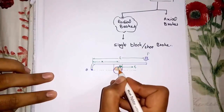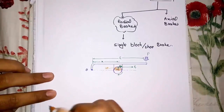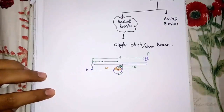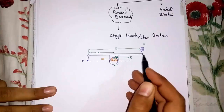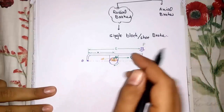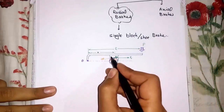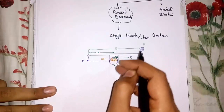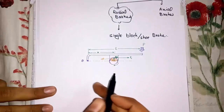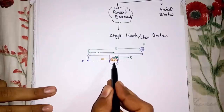The shaded area is the contact between the brake shoe and the wheel. The angle of contact between brake and shoe is denoted by 2 theta. When we apply the force P on the lever, the shoe will come in contact with the wheel and offer resistance, which will ultimately cause speed reduction.